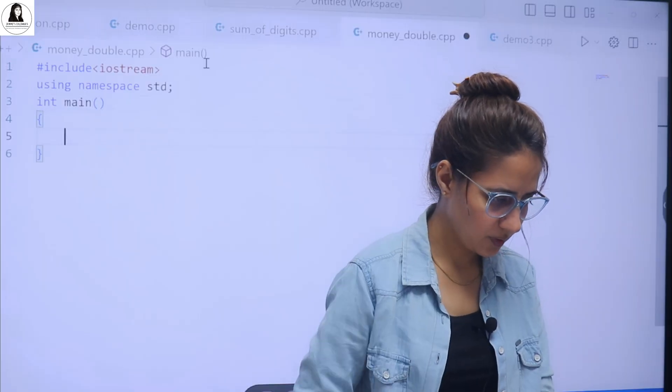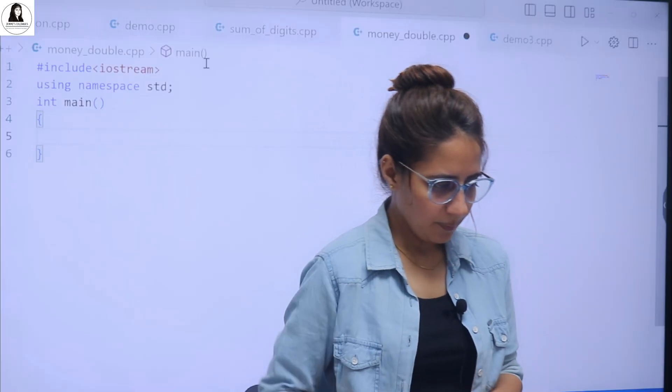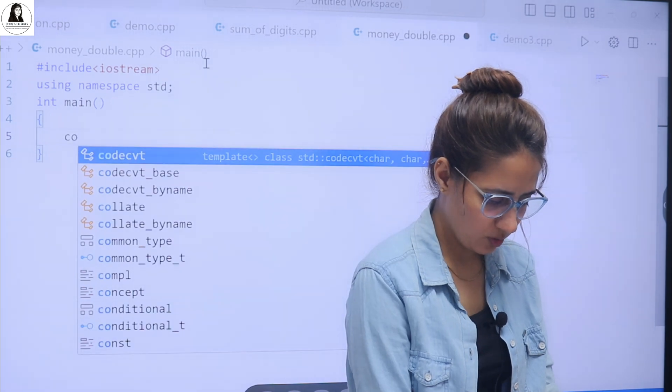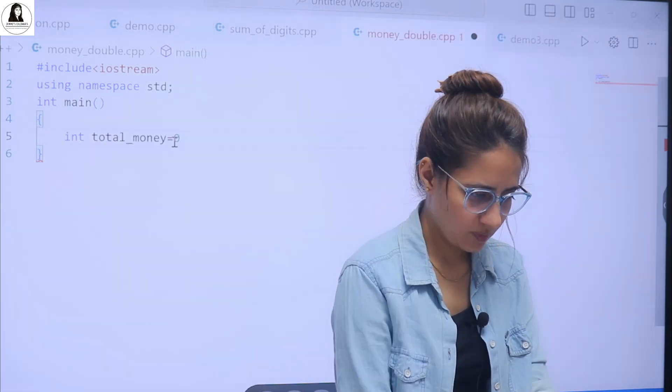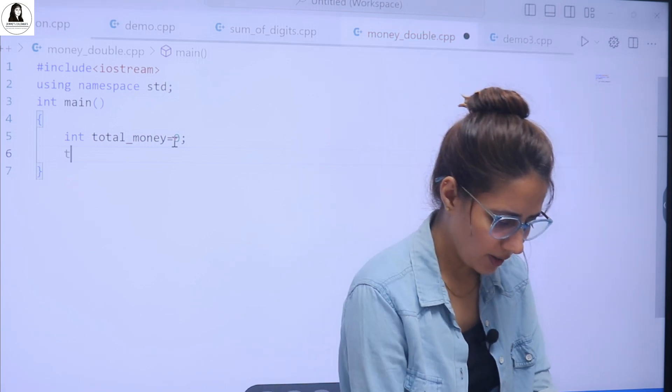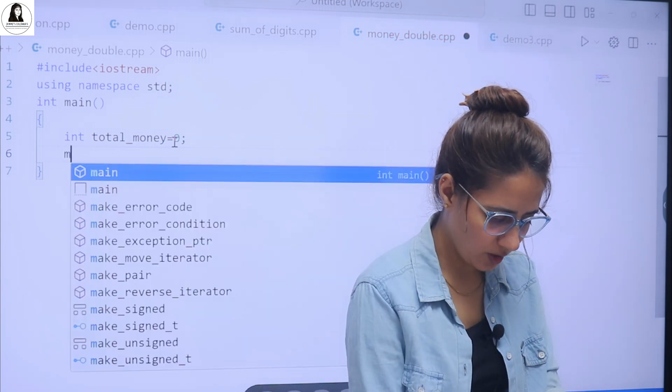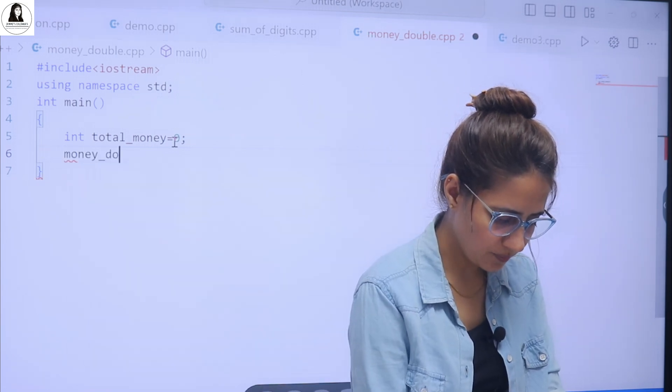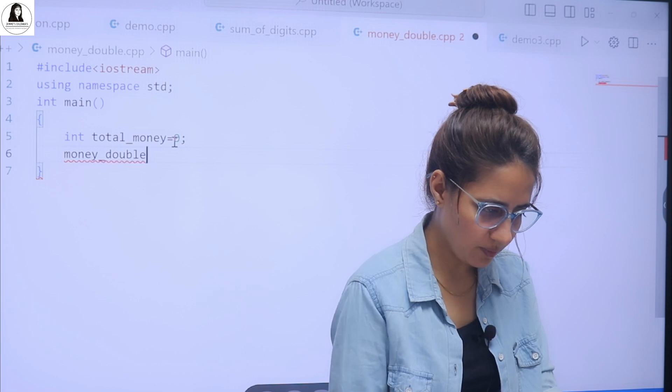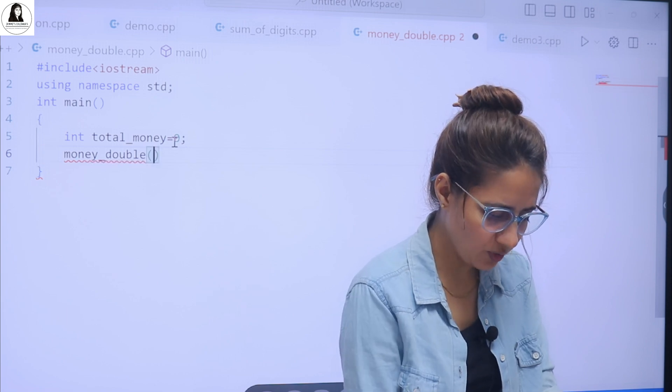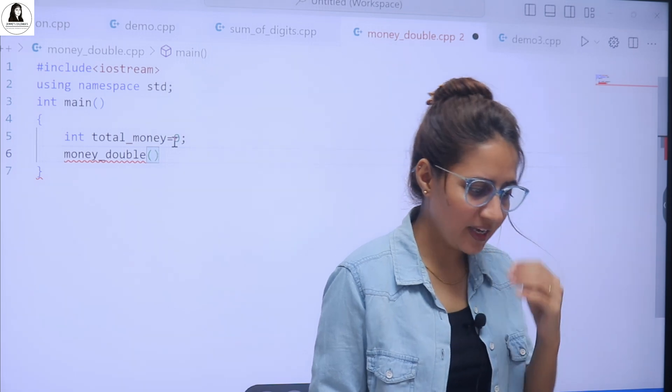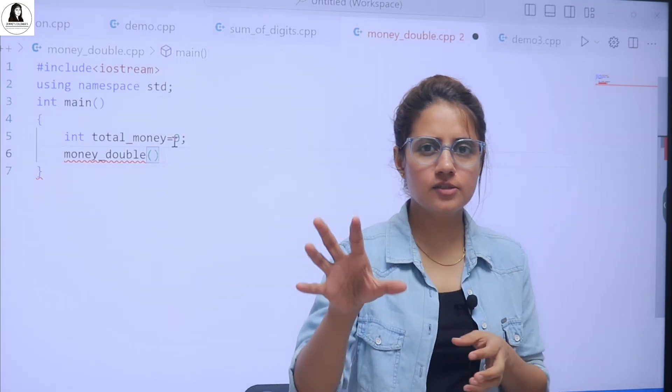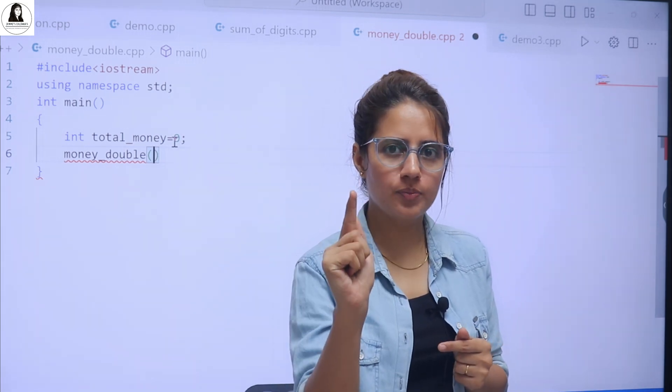So I hope you have done this. Right. Int main and I am just calling like, or, let's take a variable int total money and we are calling a function. Suppose we have a function name. Let's take money double or double money. Something like this. Any function name you can take. And here we are passing what? Number of days. Obviously, we will pass number of days. Because the money, because here is, at starting we have only 1 rupee.